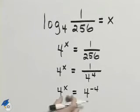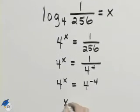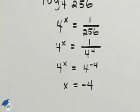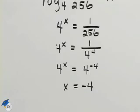And then if the bases are the same, the exponents have to be the same. So the value of log base 4 of 1 over 256 is negative 4.